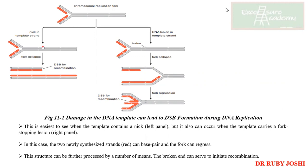We have a figure over here, and this figure is talking about the damage in the DNA template which can lead to double-strand break formation during DNA replication. So you have a chromosome over here, with the chromosome replication fork. Now, suppose just imagine that there is a nick, a break. So what will happen? Your replication will get stopped right there. And it is not going to proceed further. During the replication, only one of the parental strands will have its complete daughter strand, and the other one is broken. So here we see that there is a loss.